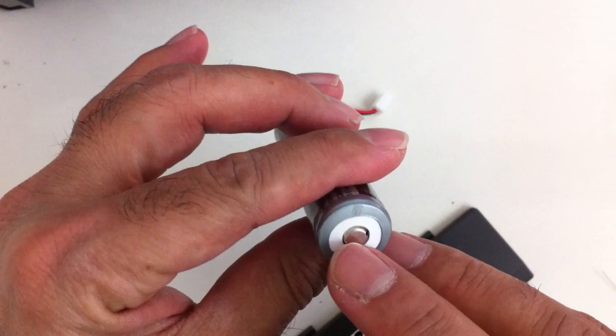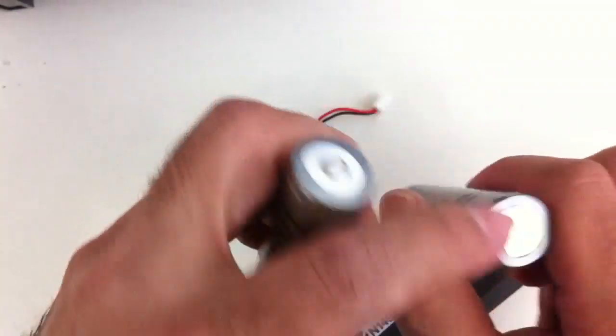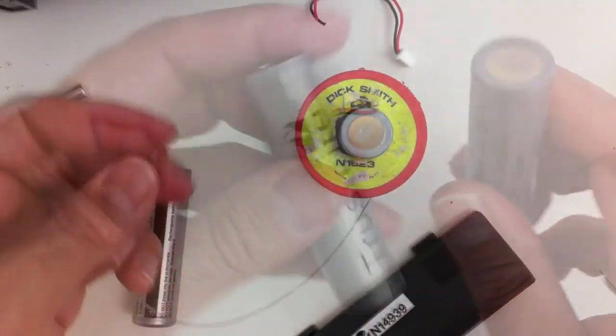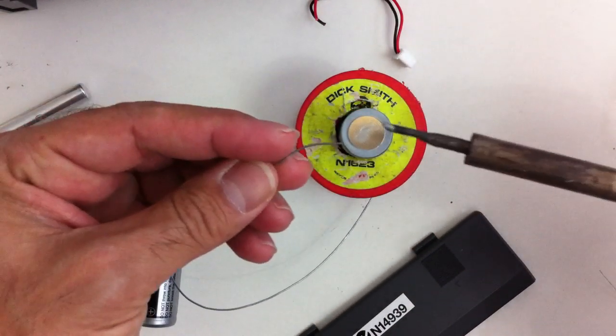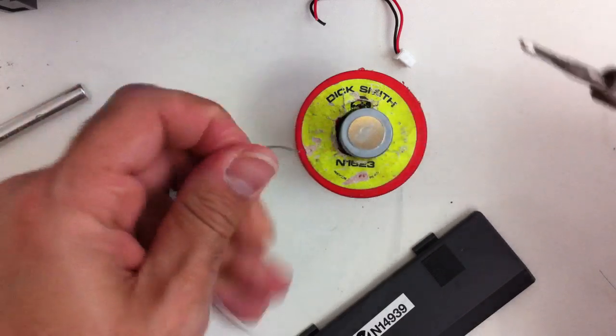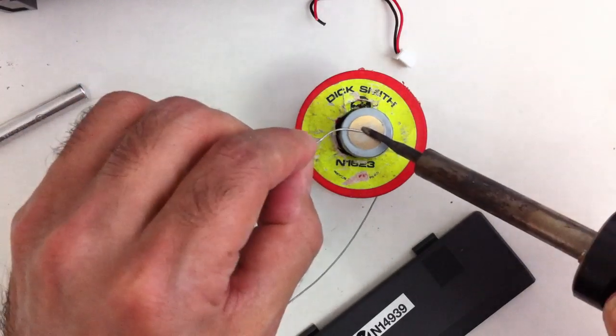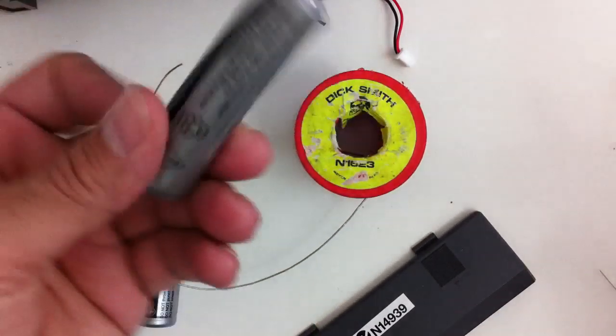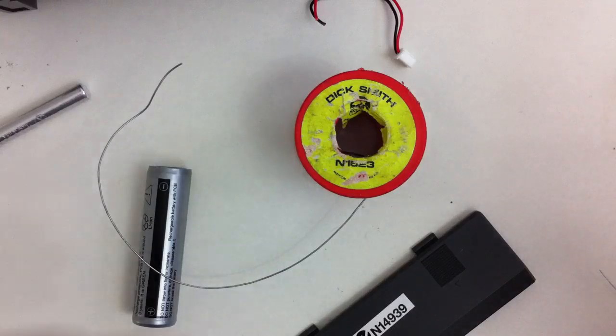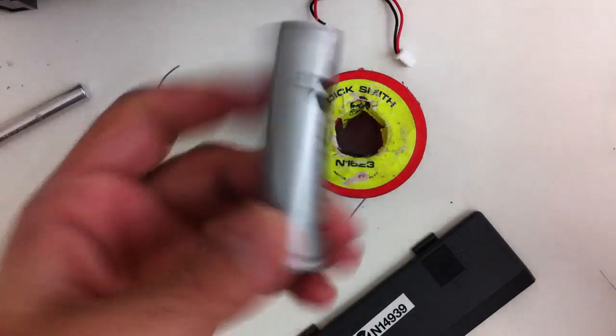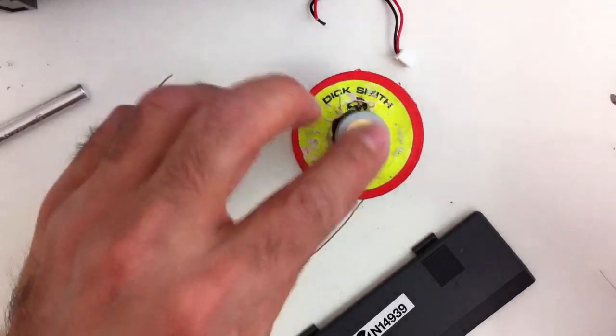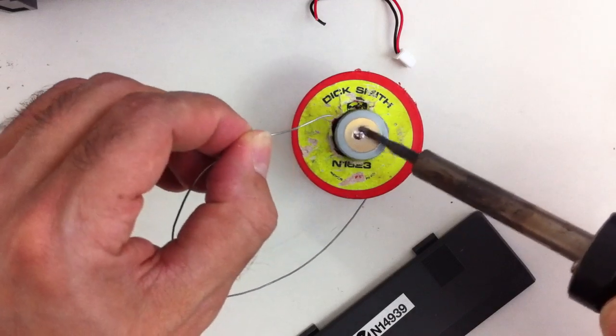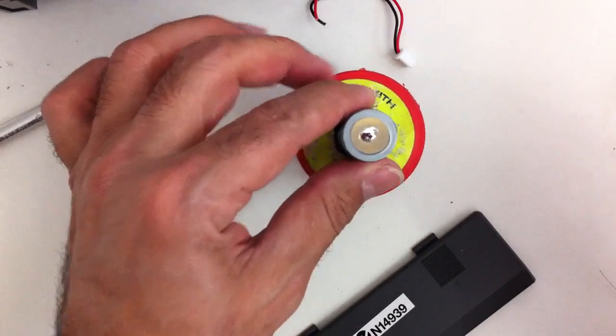So what I've done here is I've just run a little bit of wet and dry on either end of the batteries. This will just help me solder them. Making sure the soldering iron is nice and hot. Get a little bit of solder on this. And that's nicely done. Same deal here. And that one's done.